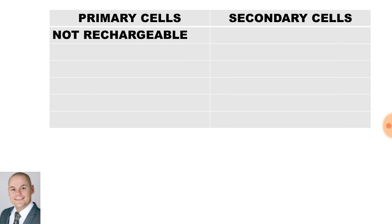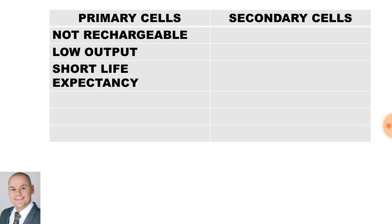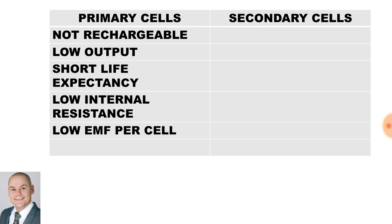When comparing a primary cell to a secondary cell, a primary cell is not rechargeable. It has low output, short life expectancy, low internal resistance, low EMF per cell, and is smaller and easier to handle.